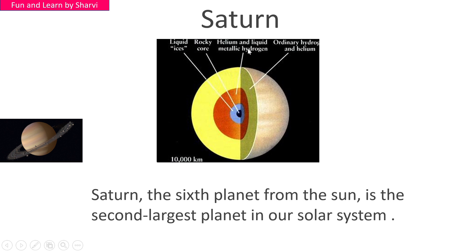Saturn's internal structure includes a liquid ice rocky core, helium and liquid metallic hydrogen, ordinary hydrogen, and lime layers.